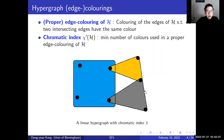Here we have a linear hypergraph and a proper edge coloring with three colors. And because there is no proper edge coloring with two colors, this linear hypergraph has chromatic index exactly three.